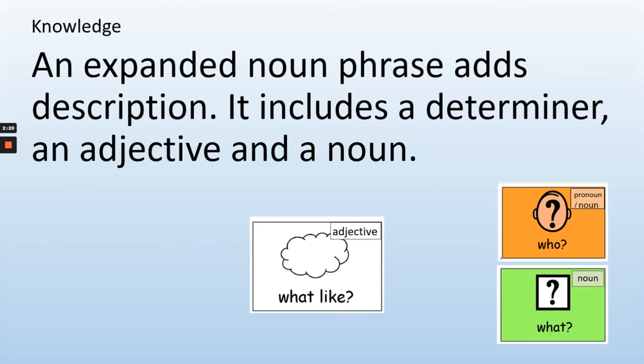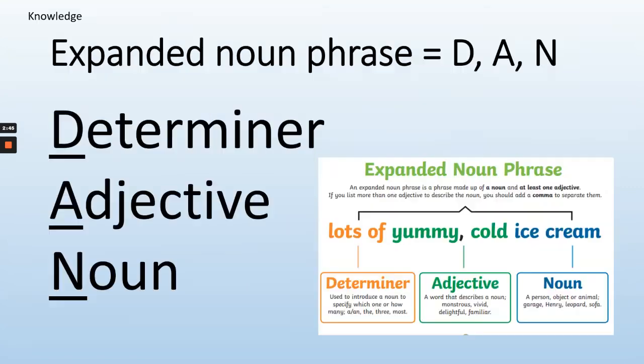An expanded noun phrase adds description, and it includes a determiner, adjective, noun. So what does it add? Description — and it includes a determiner, adjective, noun. For example: lots of yummy cold ice cream. Lots is the determiner, yummy and cold are the adjectives, and ice cream is the noun.